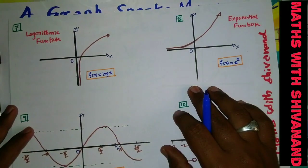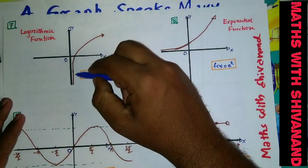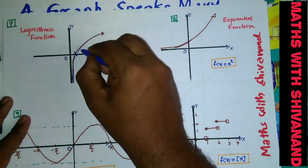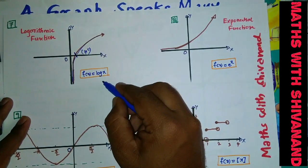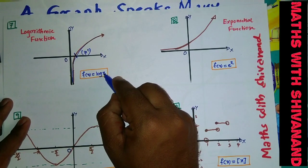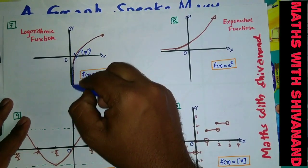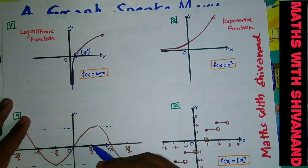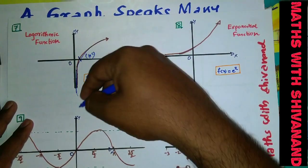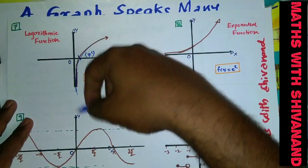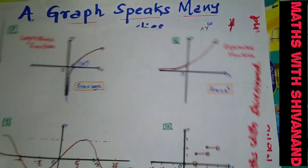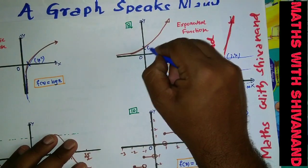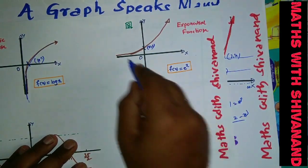Graph number seven is the logarithm function. It looks similar to the square root curve. It meets the x-axis at the point (1, 0), because log(1) = 0. The logarithm function will never touch the y-axis — the y-axis is an asymptote for log functions. This applies to log(2x), log(3x), log(4x), and any similar logarithmic function.